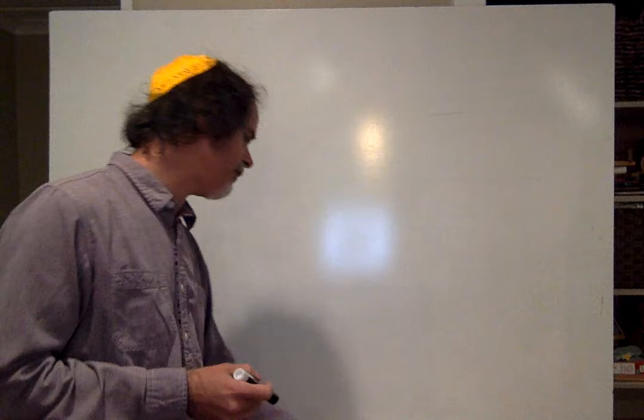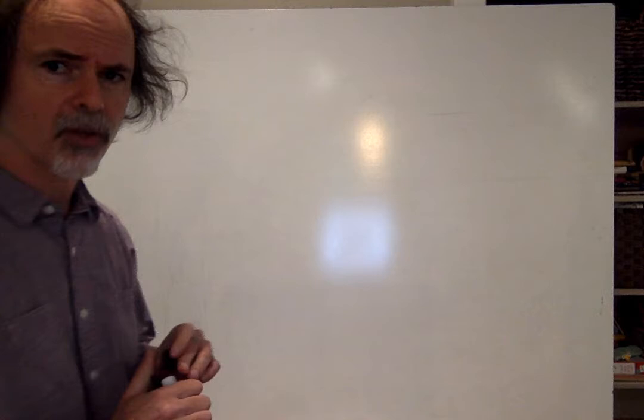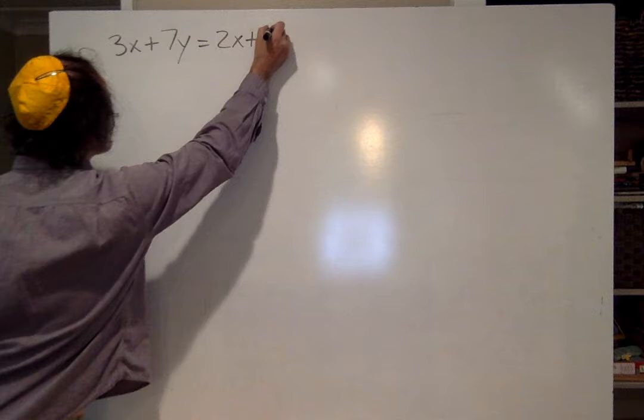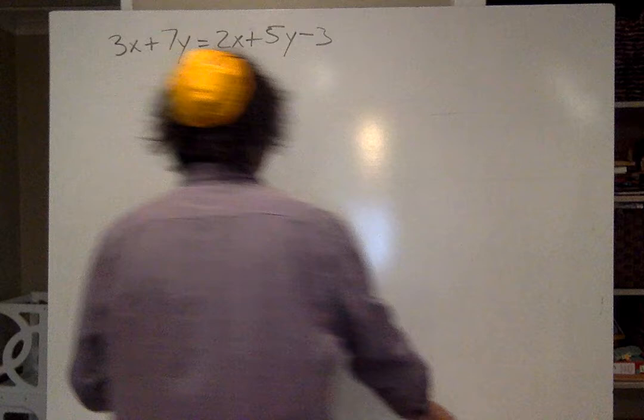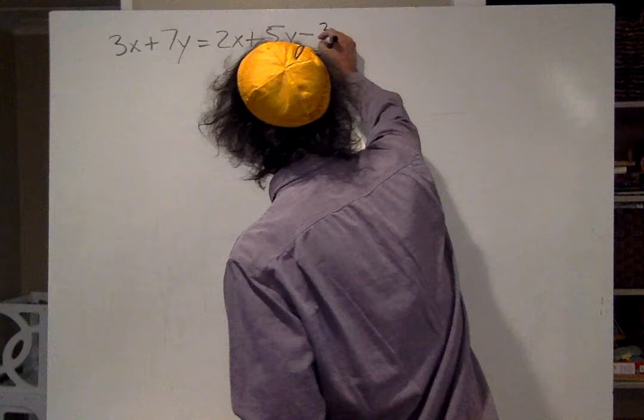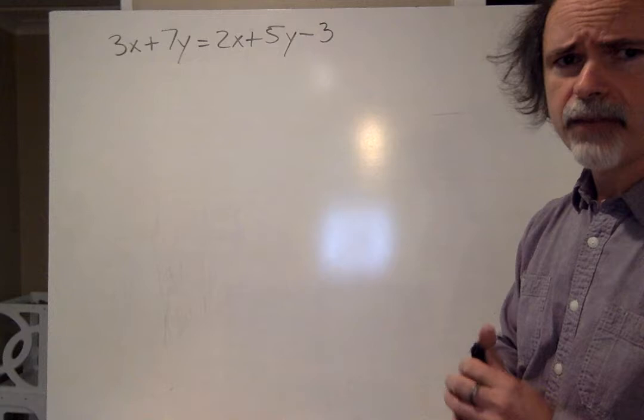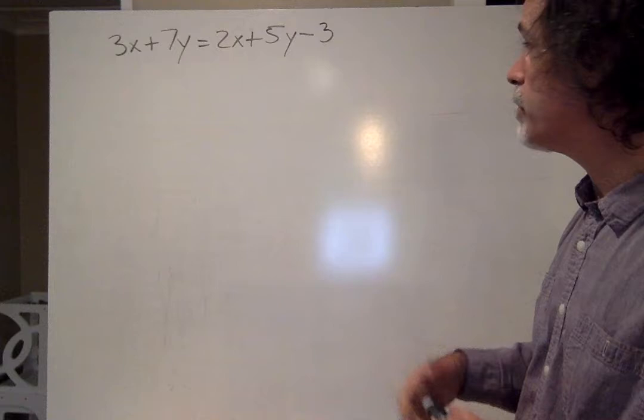All right, so now we're going to do section 7.4. This section is about two specific forms of the equation for a line. So remember, if we have anything like 3x plus 7y equals 2x plus 5y minus 3, that's an equation. It's a relationship between the x and the y. And I can solve it. I can put in x values and solve for the y values. And if I do that for a bunch of different x's and get out a bunch of different y's, it'll make a line.